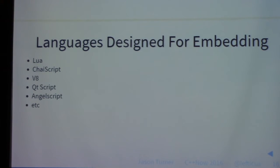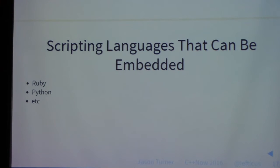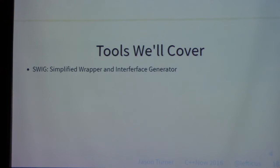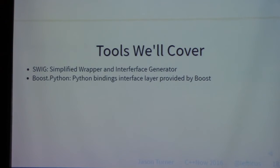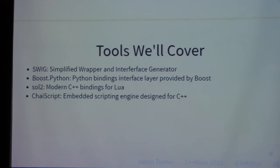There are two main categories of languages. First, languages designed specifically for embedding: Lua, ChaiScript, V8 (Google's JavaScript engine), QTScript, AngelScript, and others. Second, languages that can be embedded, with Ruby and Python being the main ones. These have very distinct differences. We're going to cover SWIG (the Simplified Wrapper and Interface Generator), Boost Python, Sol2 (a modern C++ binding library for Lua), and ChaiScript.